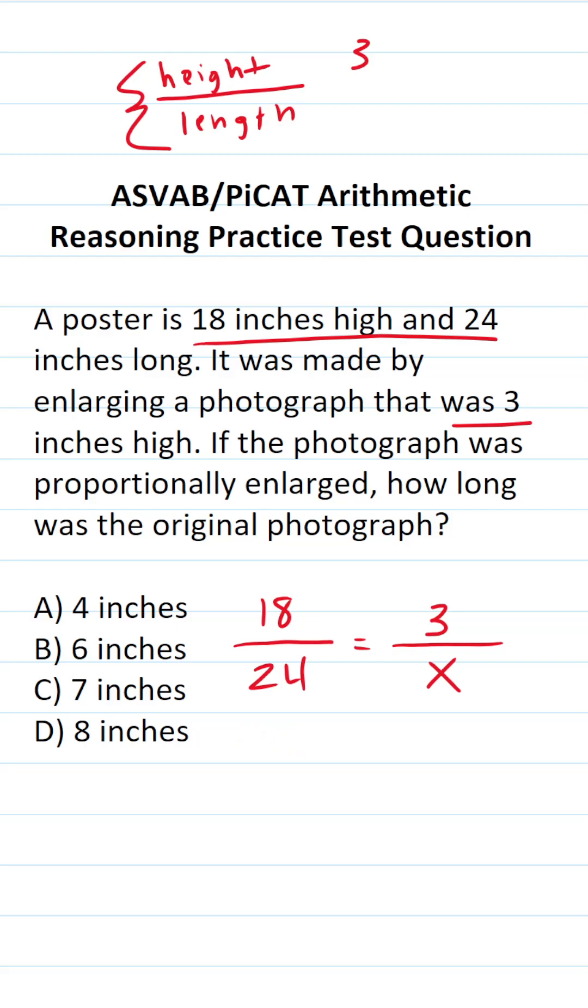That said, you want to be able to solve this one quickly and accurately since you're not given a reference sheet or a calculator on test day. The way we're going to do that is by saying this: to make a height of 3 inches become 18 inches, we would multiply it by 6. So to make this unknown length 24 inches, we're also going to multiply it by 6.